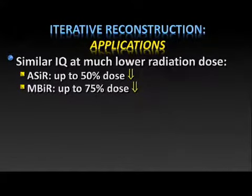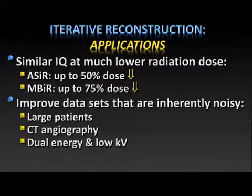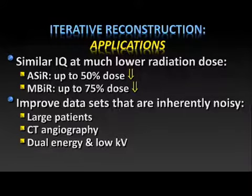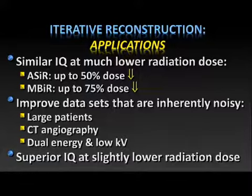One way to get similar image quality at much lower radiation dose is to use iterative reconstruction, which can drop dose up to about 50%. Another way is to use model-based iterative reconstruction (MBIR), which can decrease dose up to about 75%. These technologies improve data sets that are inherently noisy and can be useful for large patients, noisy CT angiogram scans, and dual energy and low-KV scans. They clearly result in better image quality at lower radiation dose.